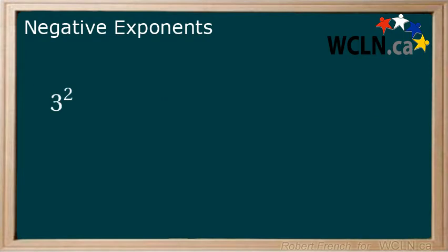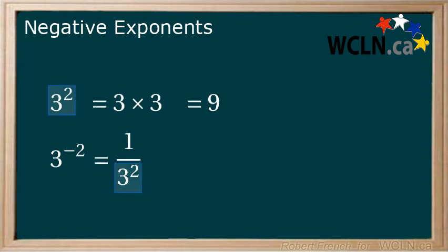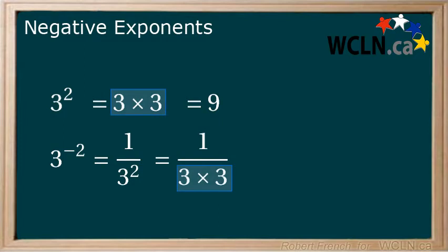3 to the power of 2. An exponent means we will be multiplying our base so we get 3 times 3 which is 9. Now let's look at 3 to the power of negative 2. A negative is often considered the opposite of something. What is the opposite of multiplying? Dividing. So our 3 to the power of negative 2 becomes 1 over 3 to the power of 2 which becomes 1 over 3 times 3 which is 1 over 9.